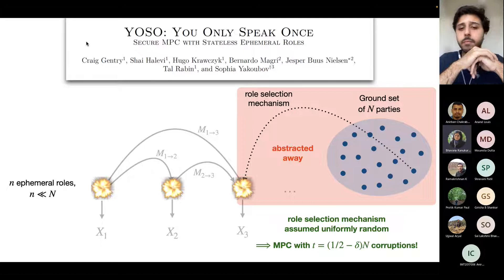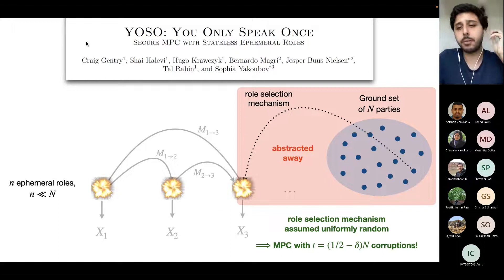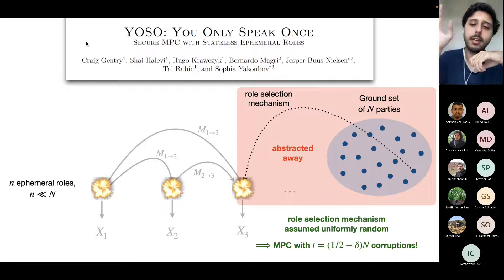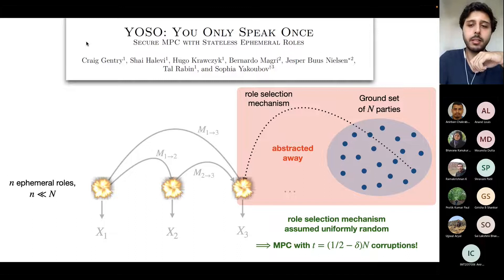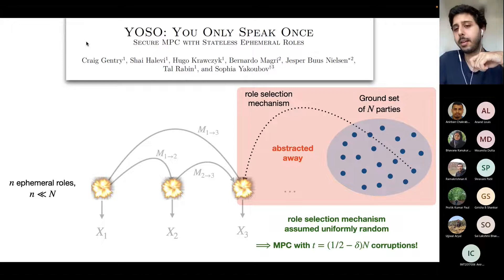If you corrupt parties when they execute some role, they can deviate arbitrarily from whatever the specification of the role was. If you corrupt say 40% of the parties, then if you're picking a party uniformly at random to execute some role, there's basically a 40% probability that you're going to pick a corrupted party. And these are independent — every time you execute a new role, you pick a new uniformly random party, so you always have 40% probability of getting a corrupted party.